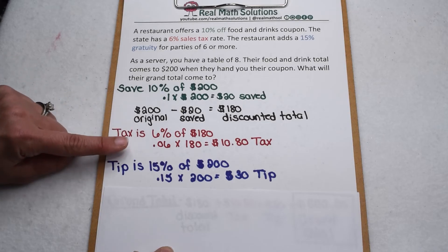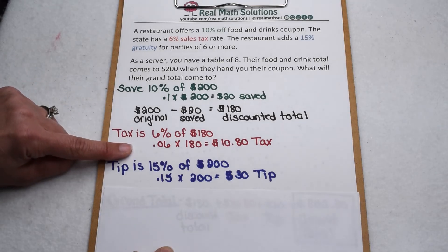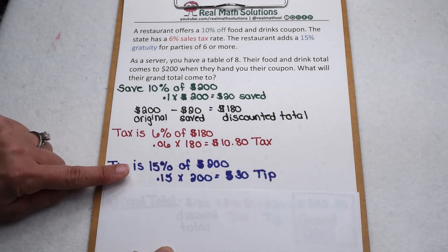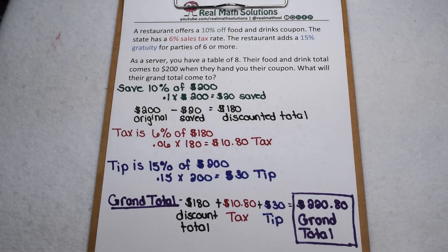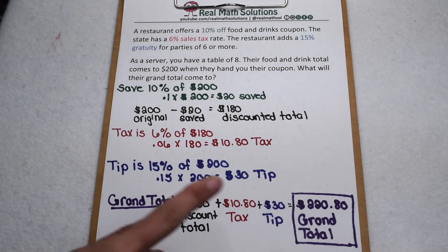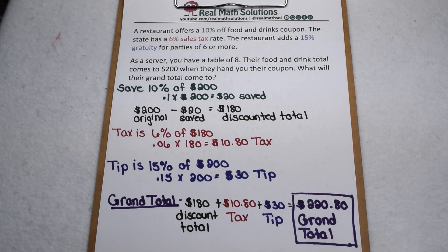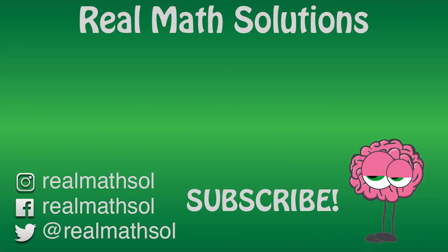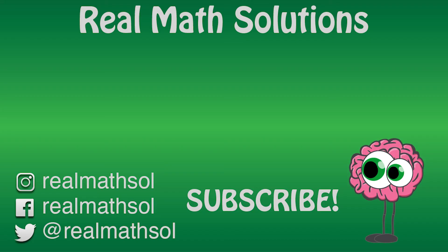To find the grand total, we add what they're actually going to spend on food and drink ($180), their sales tax ($10.80), and the expected tip ($30). That comes out to a grand total of $220.80. Check out the other videos in our playlist and don't forget to click subscribe. Thanks for watching!